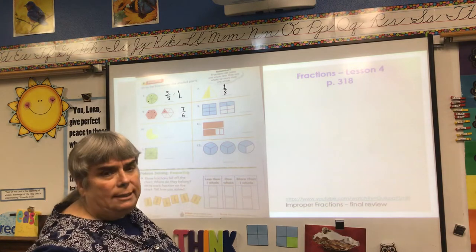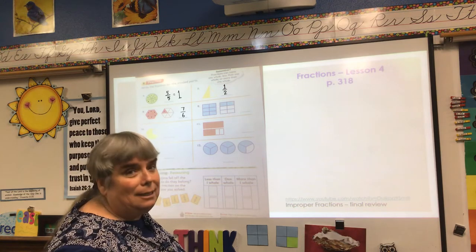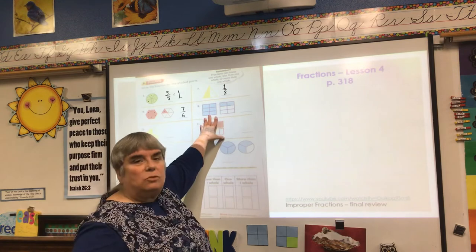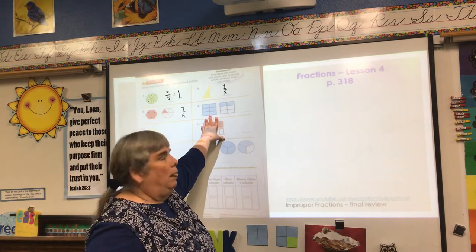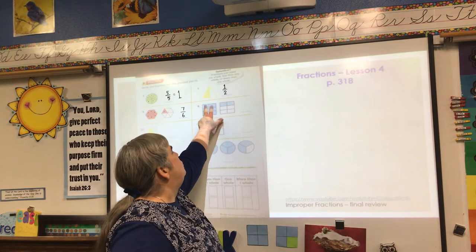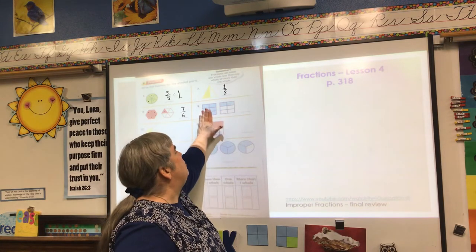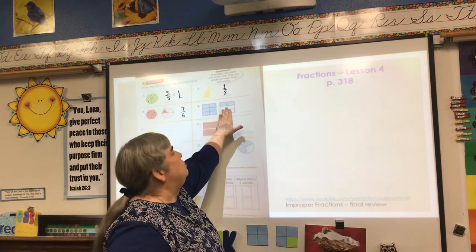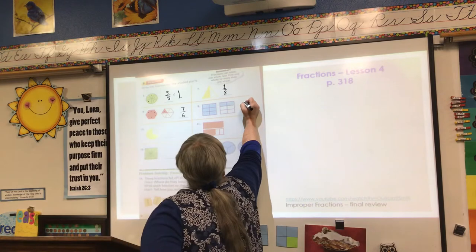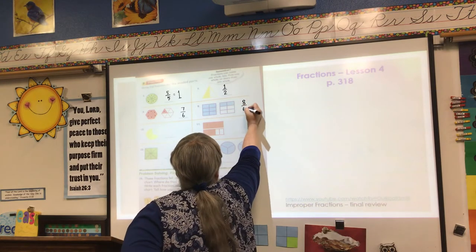The reason I call it sixths is because each one of those shapes is split into six sections. These are also split into sixths, but it's a different shape — a rectangle. One, two, four, six, but then seven, eight. Remember, this is one whole and this is more than one whole. So I'm going to call this one eight-sixths.